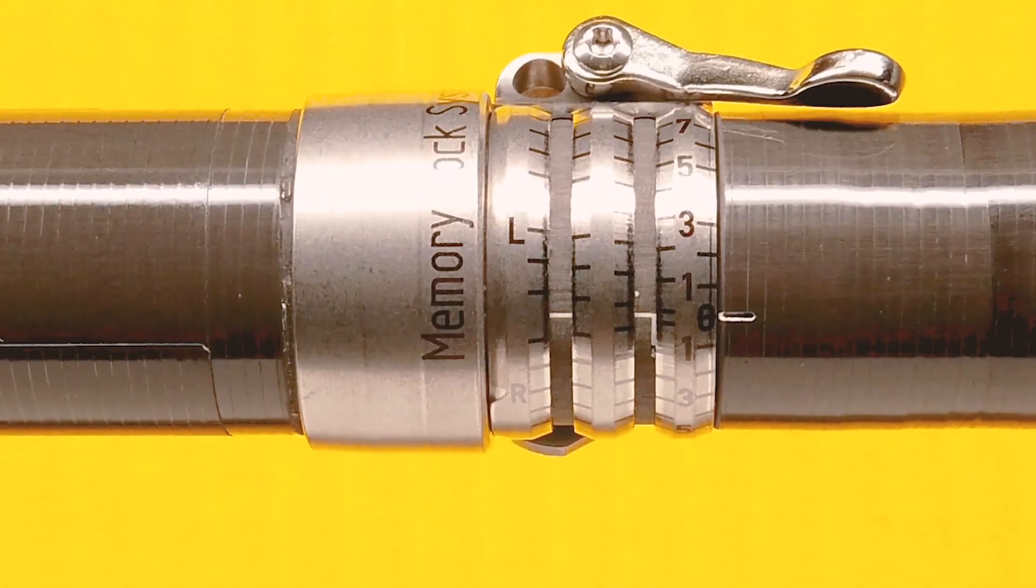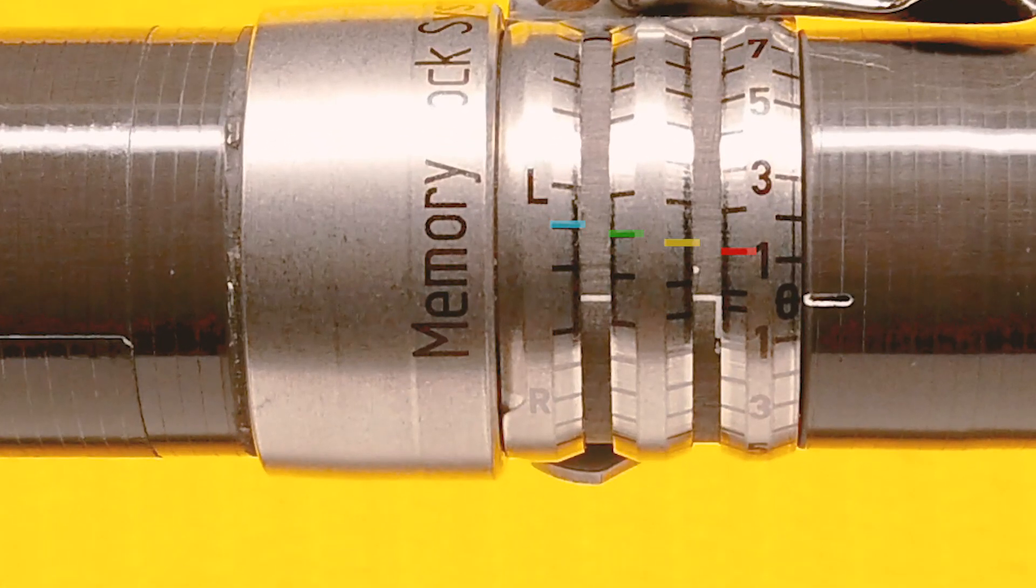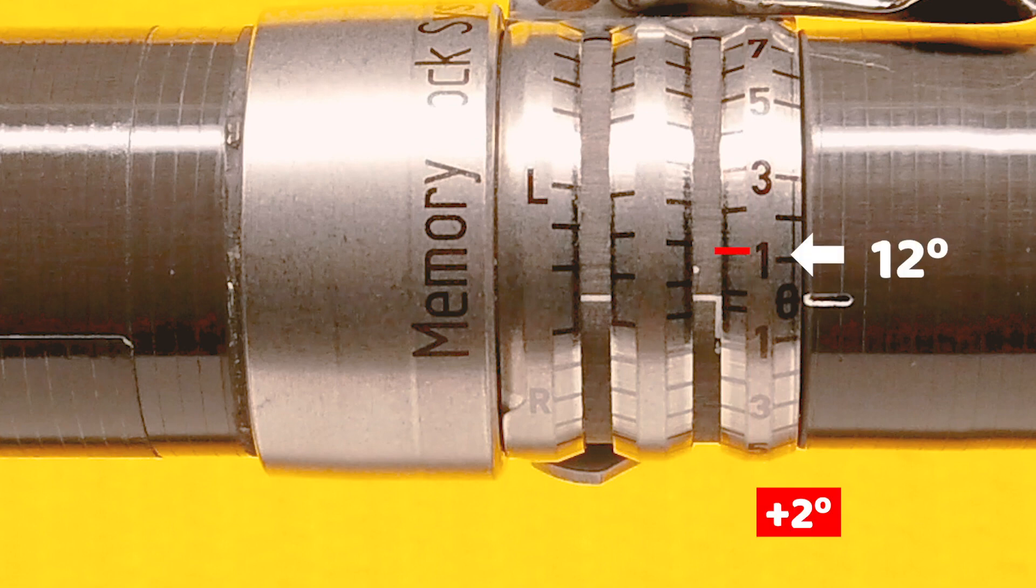Now, as we look to the left, you'll notice that there are more hash marks arranged in incremental steps. This hash mark on this column indicates 2 degrees further from the 10, meaning 12 degrees pitch. This column indicates plus 4 degrees, meaning 14 degrees pitch. This column plus 6 degrees, and this column plus 8 degrees.